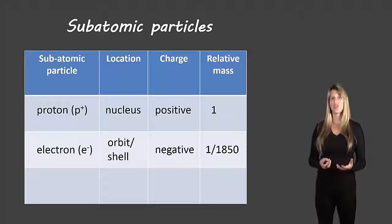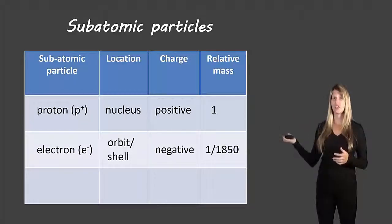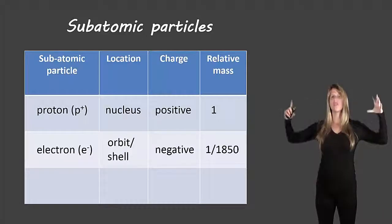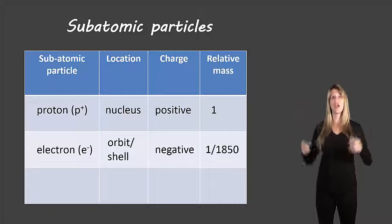The next one is the electron. The electron has the symbol lowercase e with a superscript negative, e for electron and negative because it has a negative charge. Now the electrons are located in the orbits or the shells, so in space outside of the nucleus.